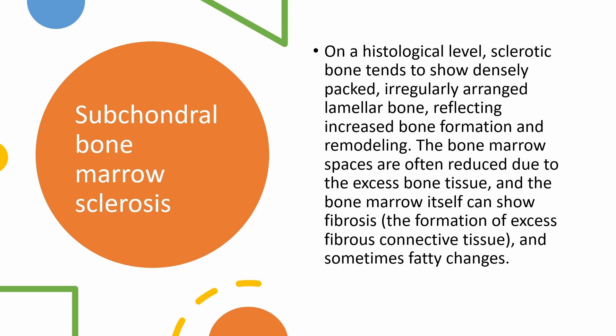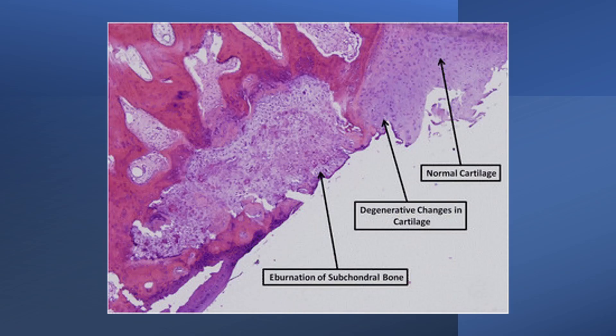When examined microscopically, sclerotic bone in osteoarthritis tends to exhibit densely packed, irregularly arranged lamellar bone, indicative of increased bone formation and remodeling. The bone marrow spaces often contract due to the excess bone tissue, and the bone marrow can present fibrosis and, in some cases, fatty changes.